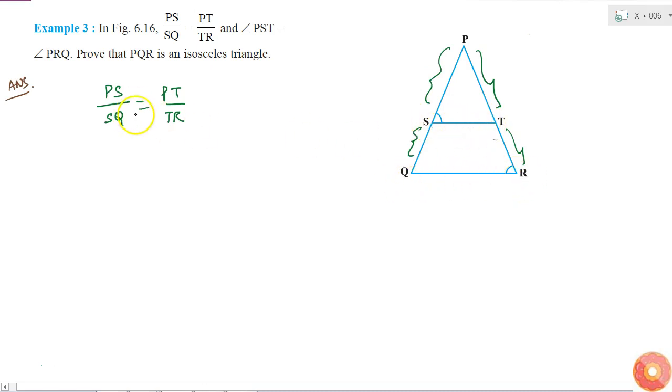This condition means that the line ST is parallel to QR. So now, if ST is parallel to QR...